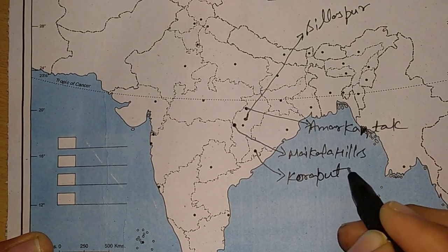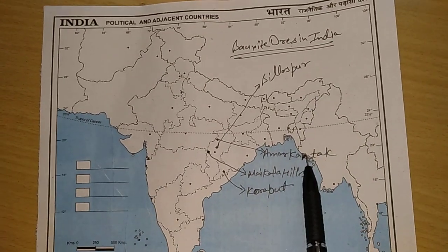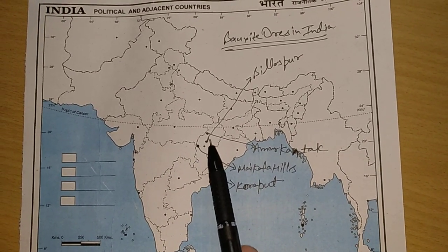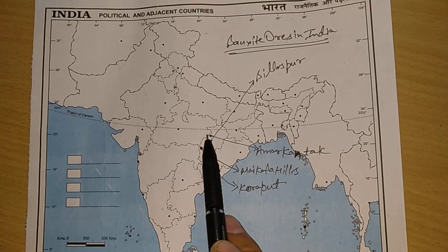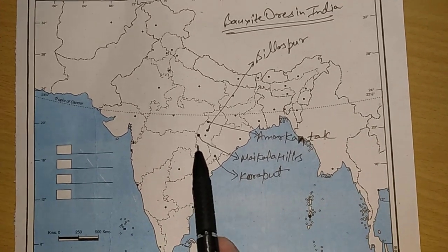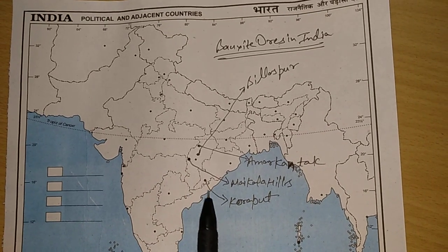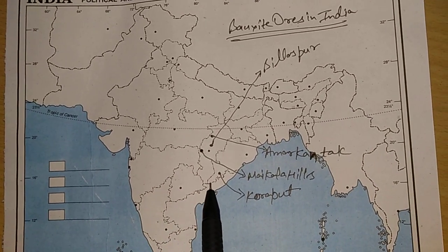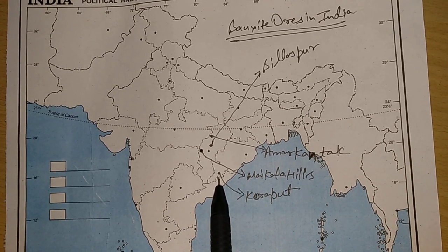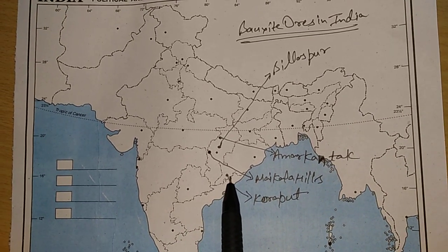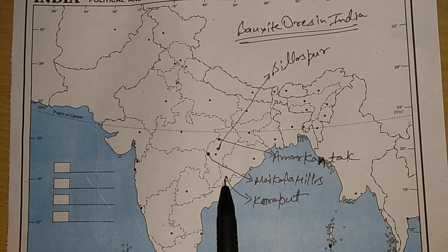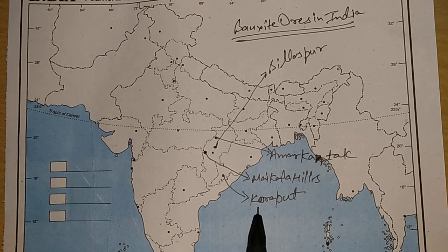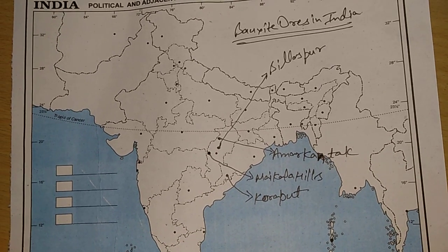So guys, you have four of them: Bilaspur, Amarkantak, and Maikal Hills — these three are in the 36th area. It's very easy: one capital, one C-curve, and one that touches the border. The fourth and last one is Koraput. As you will see in the south, it has the U shape on the left border.